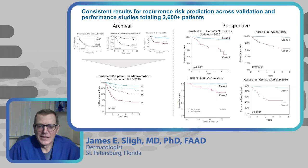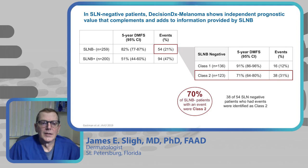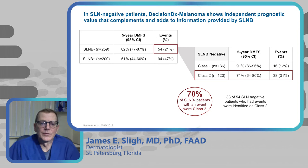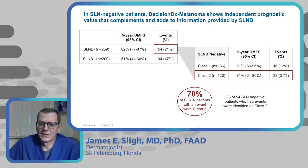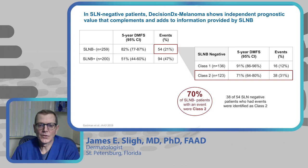Looking specifically at thin melanomas less than one millimeter, from the Gassman cohort examining sentinel lymph node biopsy negative patients: there were 54 such patients, and when gene expression profiling was overlaid, 38 of the 54 events occurred in class 2 patients. A class 2 designation identifies 70% of sentinel lymph node biopsy negative patients who ultimately go on to have events.